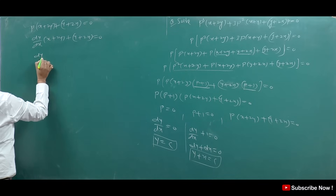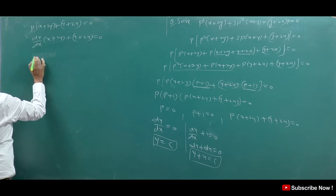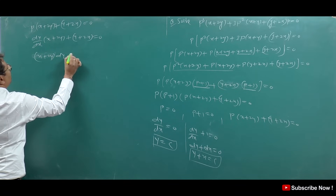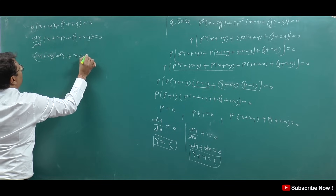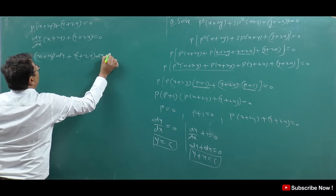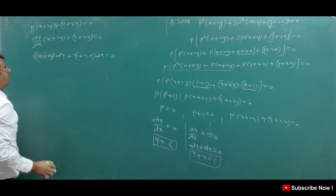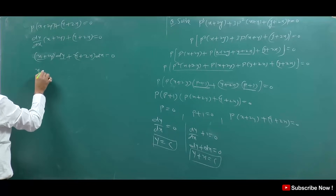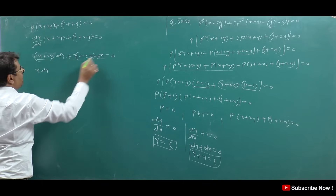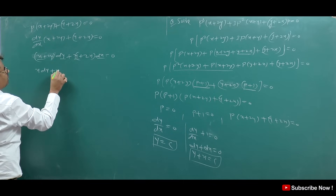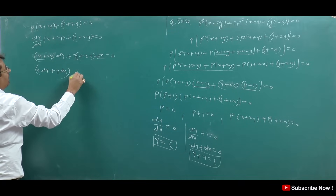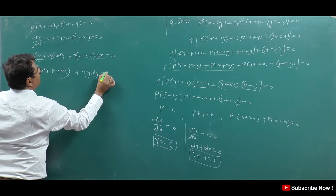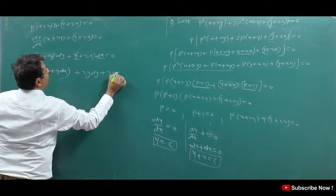From factor 1: p = 0 means dy/dx = 0, so y = C. From factor 2: p + 1 = 0 means dy/dx + 1 = 0, so dy + dx = 0, giving y + x = C. From factor 3: dy/dx · (x + 2y) + (y + 2x) = 0, which means (x + 2y)dy + (y + 2x)dx = 0.